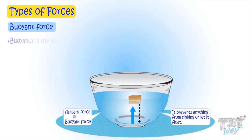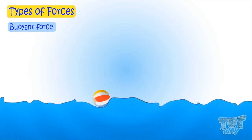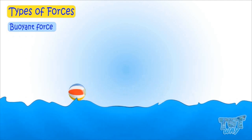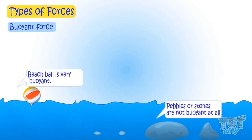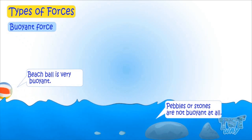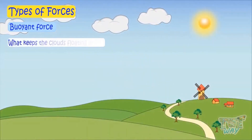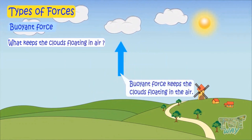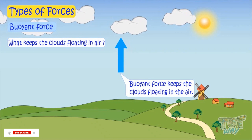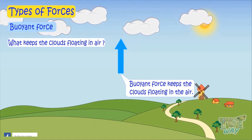Buoyancy is the ability to float. Some objects like a beach ball are very buoyant, while some others like pebbles and stones are not buoyant at all — they just cannot float. Do you know what keeps the clouds floating in the air? It's the buoyant force that keeps the clouds floating in the air. You'll read more on it in your next grades.